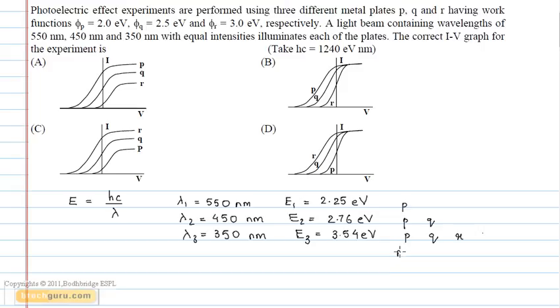So plate P will have the maximum electrons emitted and plate R will have the minimum number of electrons emitted.